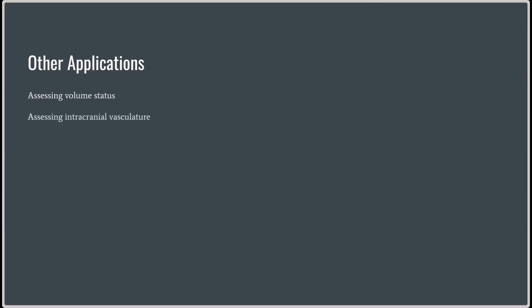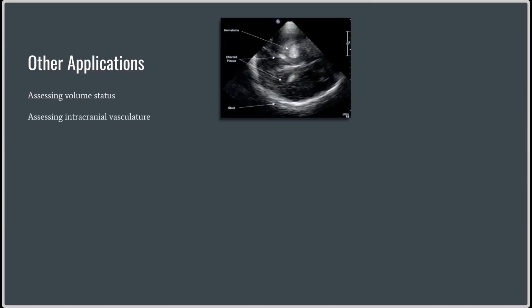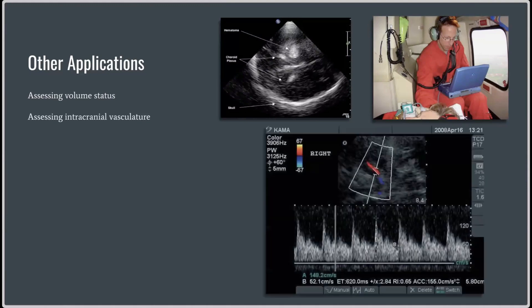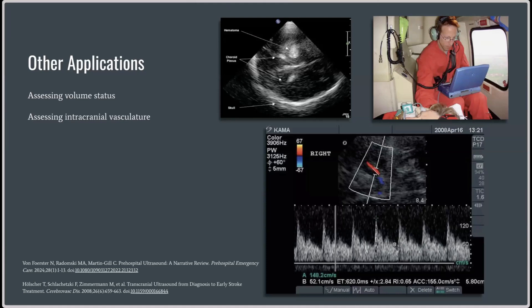Another one I found really interesting is intracranial pressure. I had no idea that ultrasound could actually analyze the brain in any way, but apparently that's a thing. Here's an ultrasound of a hematoma in the brain. This is an older study, but it was a neurologist in a helicopter assessing a stroke patient. Using the Doppler effect, they were actually able to visualize and determine that the patient did indeed have a stroke.